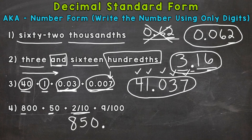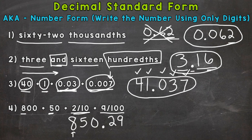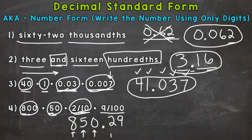After the ones we have our decimal. We have two tenths, so a two with a value of two tenths goes in the tenths place. Lastly, we have a nine in the hundredths place. Let's double-check: eight hundred is this eight, a five with a value of 50 is here, no ones so we have a placeholder zero, two tenths right here, and nine hundredths right here. Our number is 850.29.